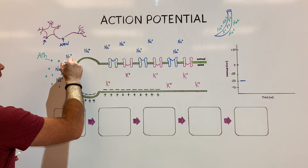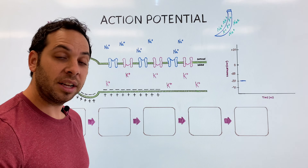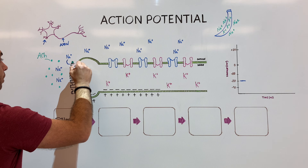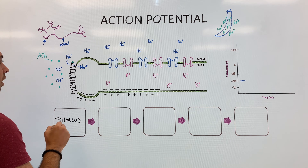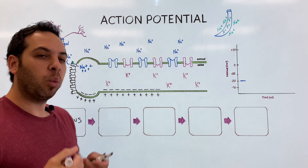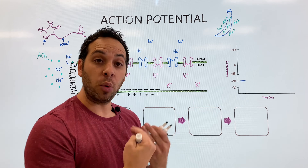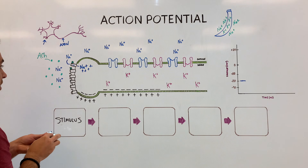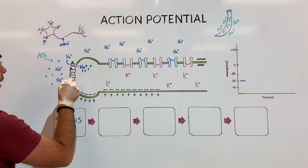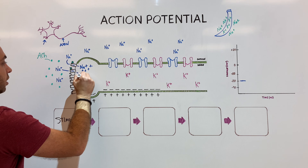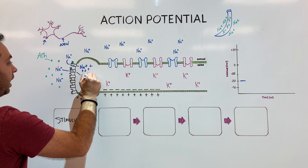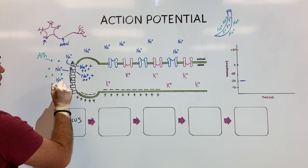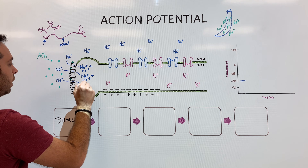These acetylcholine molecules are going to bind to the receptors on the dendrites. This is going to open the channel and bring with it positively charged sodium ions. Another acetylcholine binds to another receptor site, allowing that gate to open up and more sodium to rush in. This happens over and over again at the receptor sites — sodium rushing in, making the inside more and more positive.